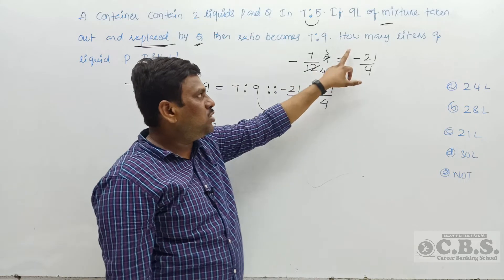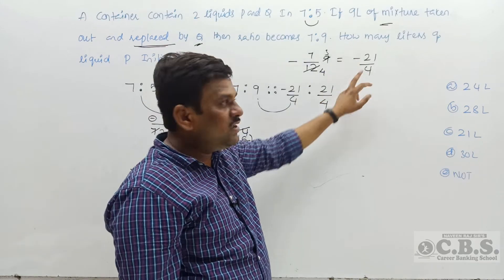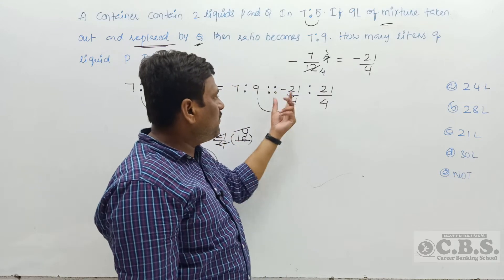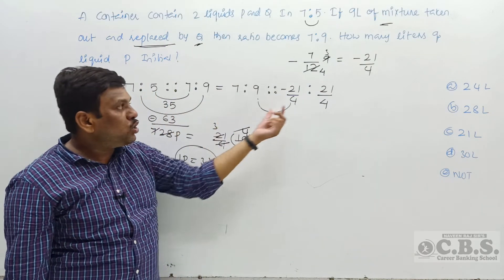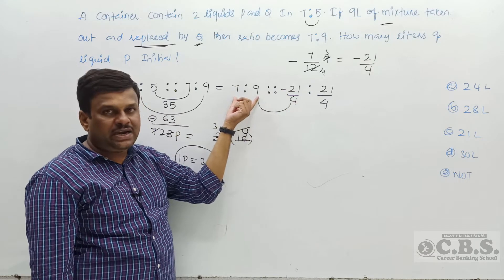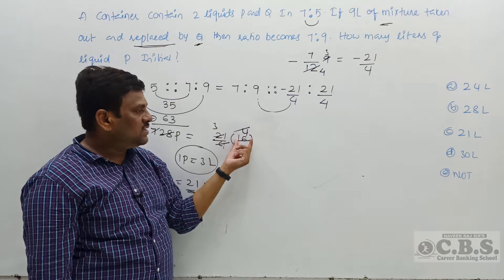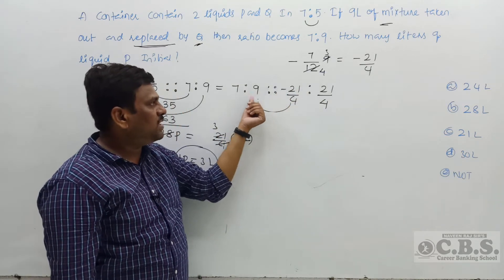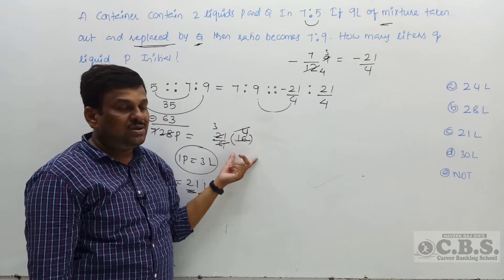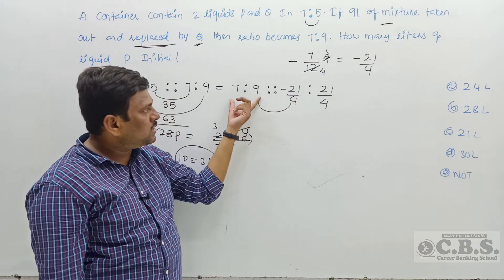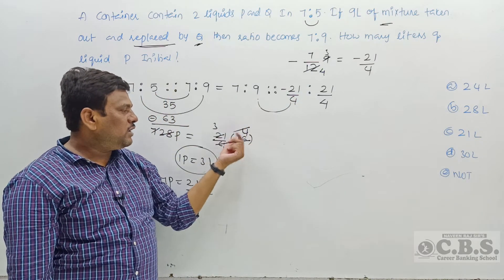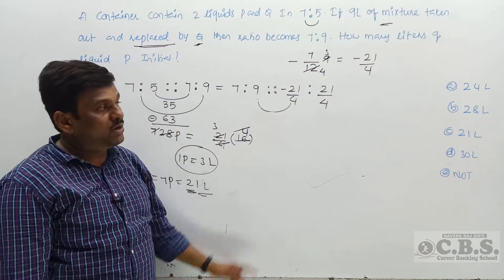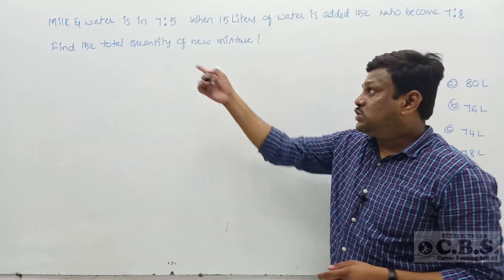To clarify the rule: when the same number is common in the change column, take it as a common factor. If you get opposite symbols (one positive, one negative), add the ratio values. If you get the same symbol, subtract. Here, opposite symbols give 7 + 9 = 16; 4 times, 7 times, 3 times — 1 part is 3 liters, and 7 parts is 21 liters. Option A is the right answer.